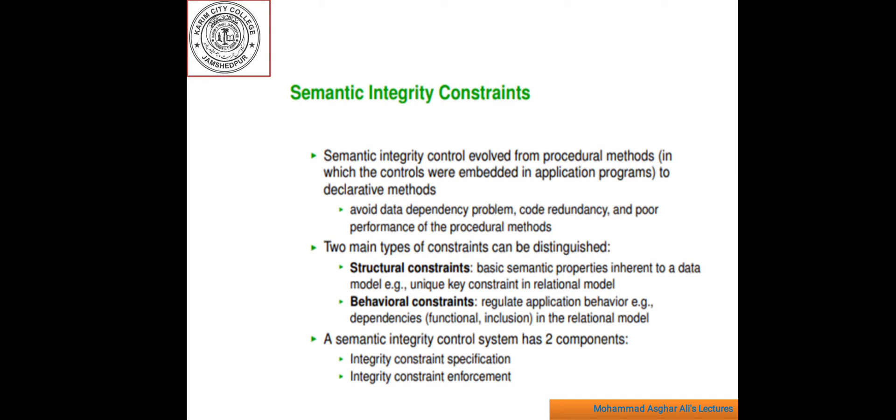Two main types of integrity constraints can be distinguished. Number one, structural constraints express basic semantic properties inherent to a model. For example, such constraints are unique key constraints in the relational model or one-to-many association between objects in the network models. Second is behavioral constraints. On the other hand, regulate the application behavior.